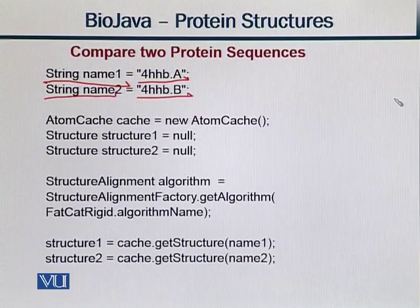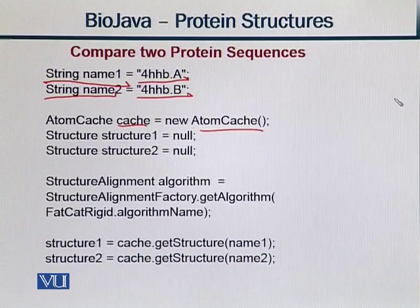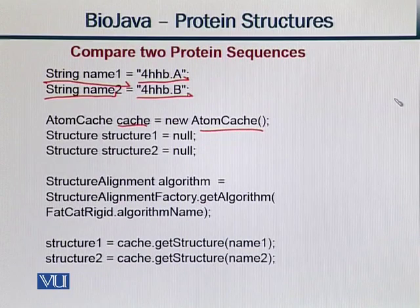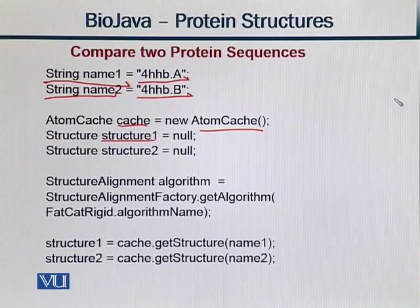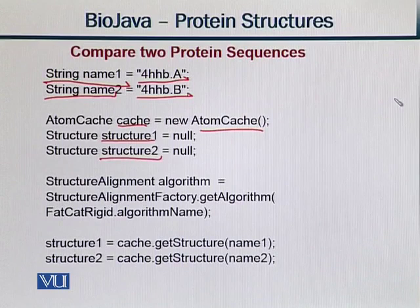Now, what do we do here? We create an AtomCache object — a cache object using new AtomCache. Basically, this cache is created for temporary storage in our virtual memory space. In Java, we can temporarily allow virtual memory storage. Then we take two structures: Structure1, which is basically for string name1, and we define Structure1. We also have Structure2. Both are initialized to null, so that we have memory allocated but no information yet assigned.